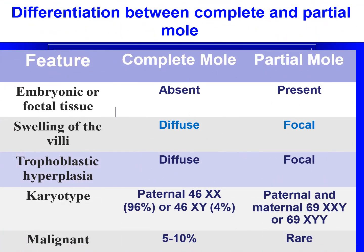Comparing complete and partial mole: in complete mole, embryonic or fetal tissue is absent; in partial mole, it is present. Swelling of the villi is diffuse in complete mole and focal in partial mole. Trophoblastic hyperplasia is also diffuse in complete mole and focal in partial mole. The karyotype is 46XX (paternal origin) in complete mole, and 69 XXY (both paternal and maternal) in partial mole. The chance for malignancy is 5–10% in complete mole, whereas it is rare in partial mole.